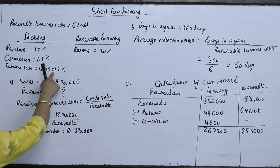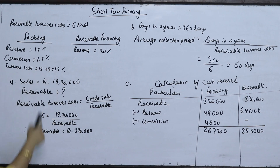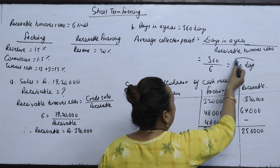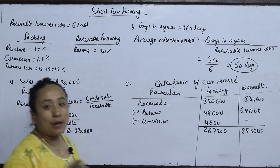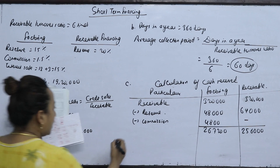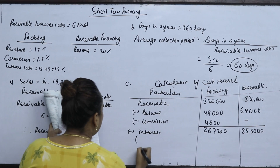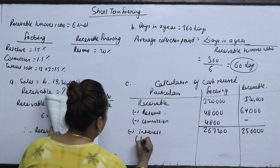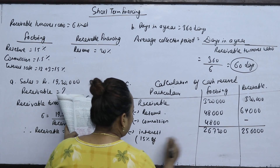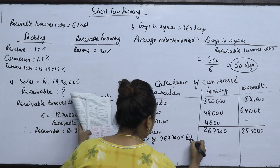The interest rate in factoring is 15%. The time period is 60 days. Interest is calculated as 15% on 2,56,000 into 60 divided by 360. Less interest at 12% plus 3% equals 15%.